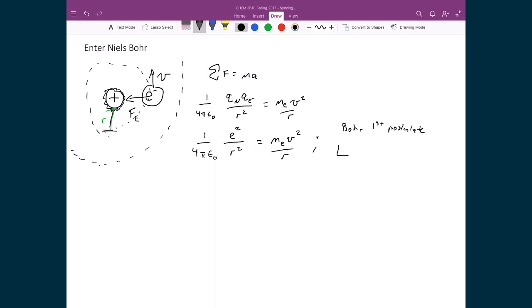So Bohr's first postulate essentially says that the angular momentum is quantized. And so the angular momentum is usually denoted as a capital L, and I can write it as m e, so the mass of the electron times the velocity of the electron, times the radius of the orbit. And what he said was that that's quantized according to n h, which is Planck's constant, divided by 2 pi.